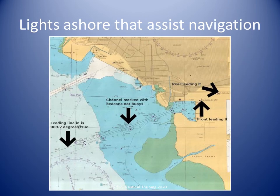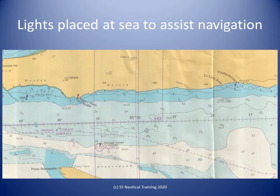Nautical charts show us the details of lights on the shore and at sea that can assist with navigation. Here we have tried to highlight the leading lights and leading line for the Sea Lots channel. Here we see the Tau Paru Point and Lalung Point lights on the south coast.